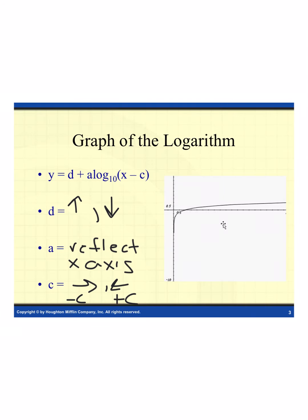So that's all of our transformations based on the log function. Another important feature is we have a vertical asymptote — in this case it's x equals 0. Your vertical asymptote is always going to be related to your c value; it's going to be the value that we're adding or subtracting to our x variable.